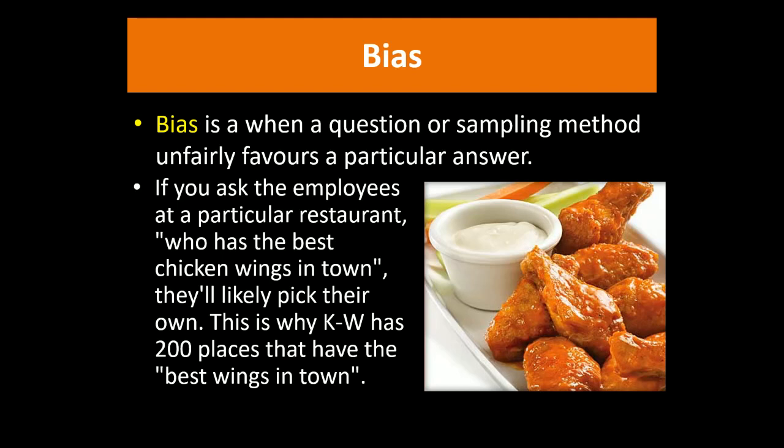Bias is actually a little bit complex to define accurately, so we're going to focus on the overall idea. Basically, it's any time something happens — whether it's the way we sample, the way we do the questions, or where or when the questions are asked — that leads to a result favoring one answer over another. It doesn't have to be intentional, but anytime we have bias it leads to results that probably aren't accurate.